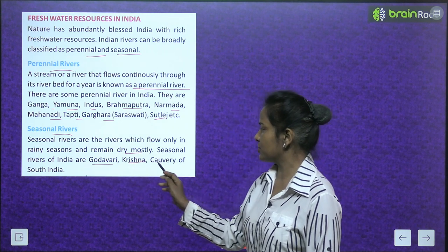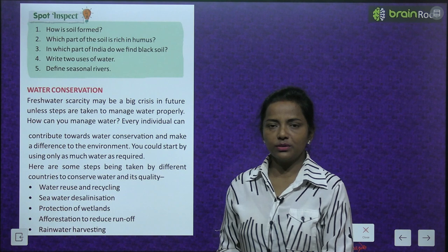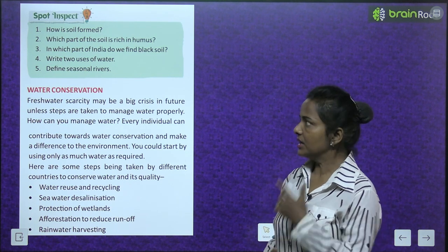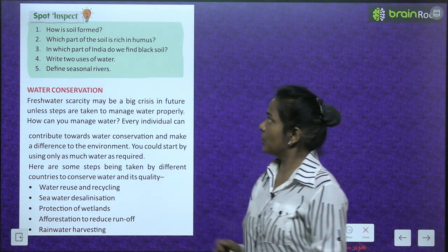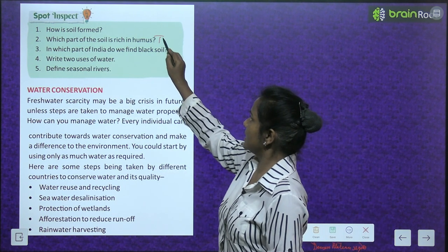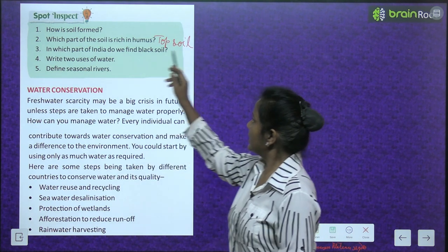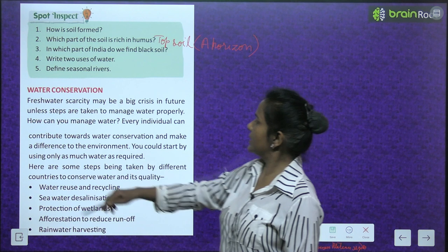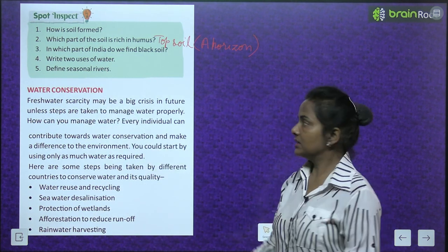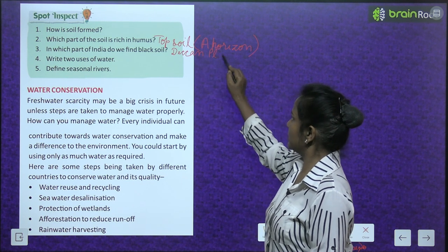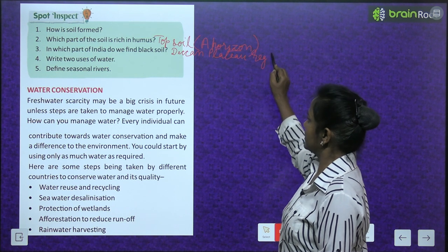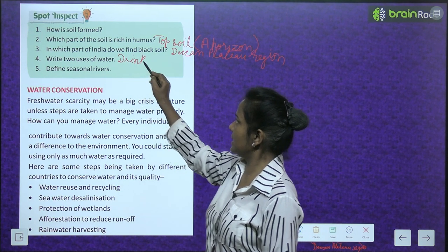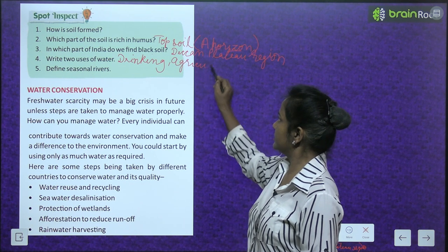Spot inspection: How is soil formed? Just go through that and write it down. Which part of the soil is rich in humus? The topsoil (Horizon A) is rich in humus. In which part of India do we find black soil? In the Deccan Plateau region. Write two uses of water: mainly used for drinking, and also used for agriculture.